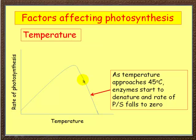As it goes over this peak, the heat starts to break the enzymes down — denature them — and so photosynthesis slows down. Eventually the enzymes will stop functioning. So that's temperature.